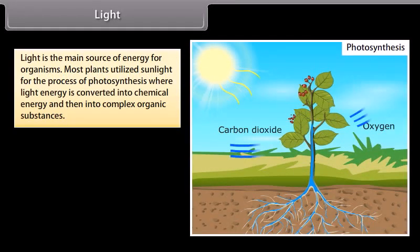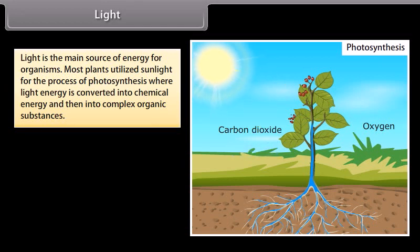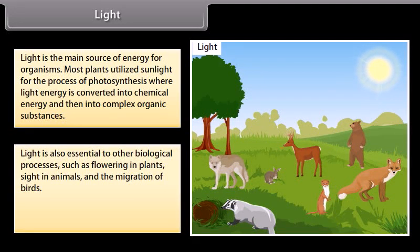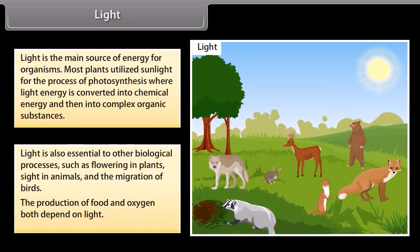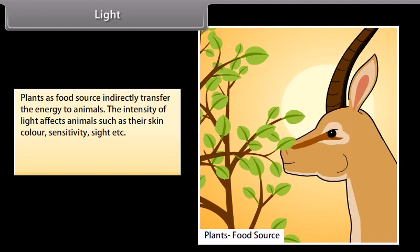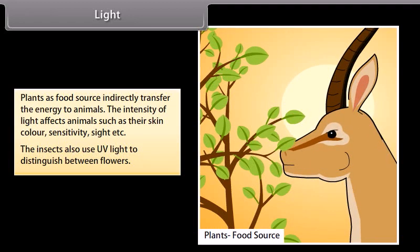Light is the main source of energy for organisms. Most plants utilize sunlight for photosynthesis, where light energy is converted into chemical energy and then into complex organic substances. Light is also essential to other biological processes such as flowering in plants, sight in animals, and the migration of birds. The production of food and oxygen both depend on light. The intensity of light affects animals such as their skin color, sensitivity, and sight. Insects also use UV light to distinguish between flowers.